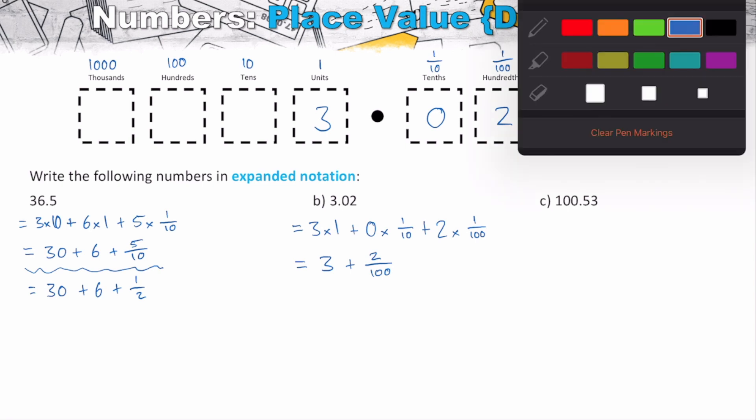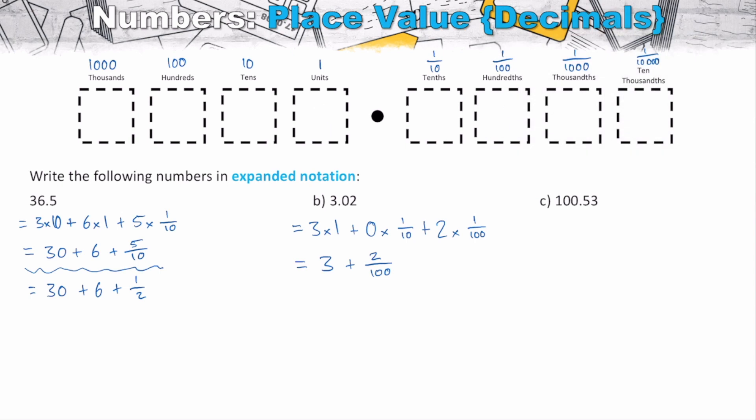So let's just try one more just to finish off this video. So we've now got 100.53. So just putting them down into our place value boxes. What this tells us, we've got one of our hundreds, I should say. So that's 1 times 100. We've got zero of our tens, so I'm going to ignore that. Zero of our units, so I'm going to ignore that as well. But then we've got five of our tenths and we've got three of our one hundredths.